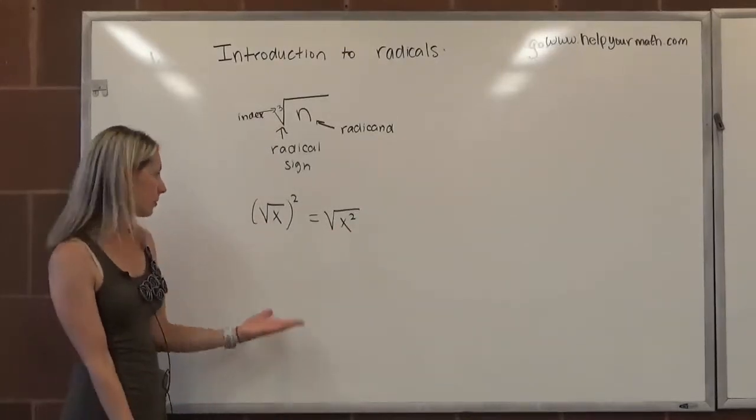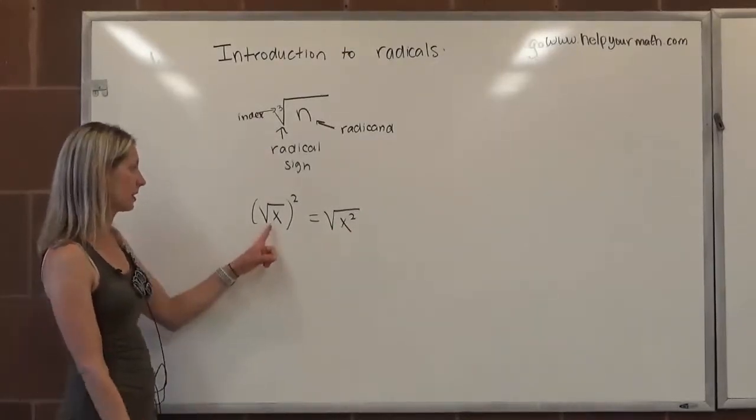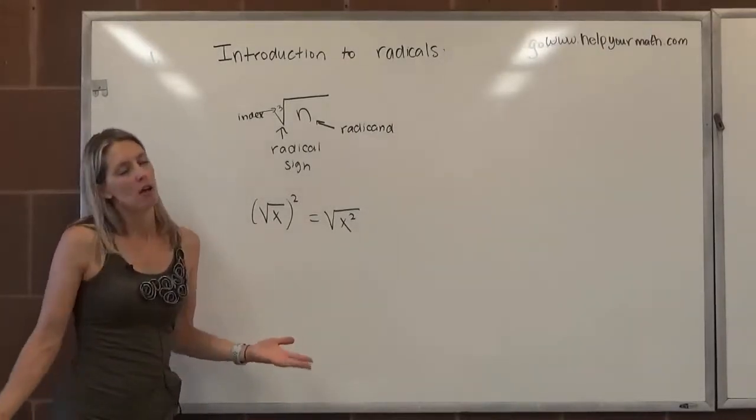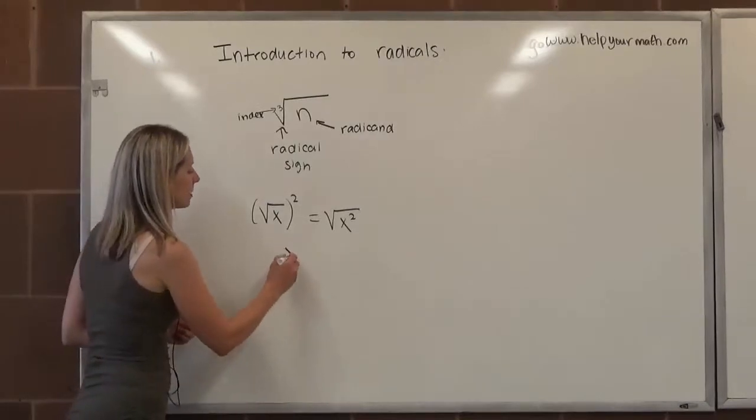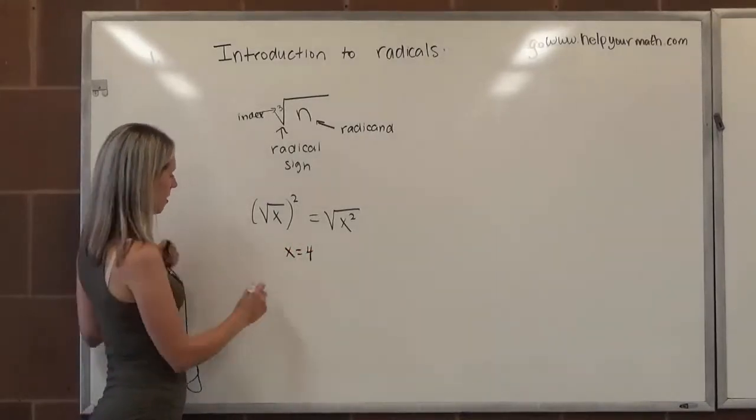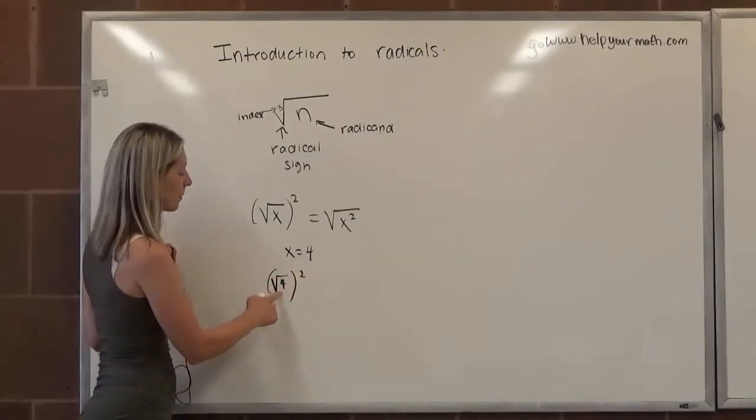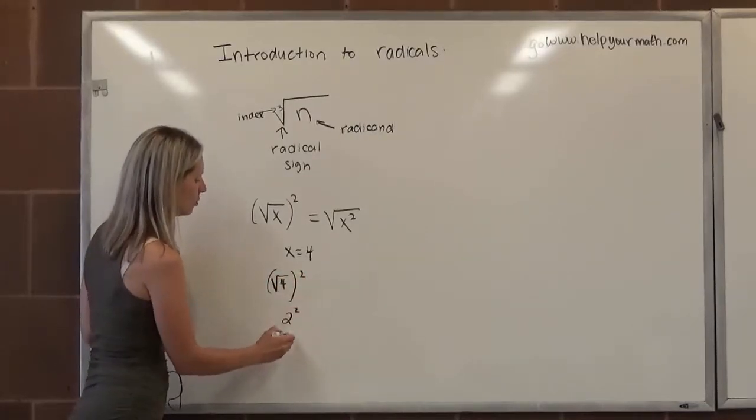We might try some examples. Okay, well, what if x is, let's keep it nice here, we're taking the square root of a number, so think of a perfect square, 4. What if x is 4? Will this hold up? Okay, well, that would be the square root of 4 squared. The square root of 4 is 2, and 2 squared is 4.